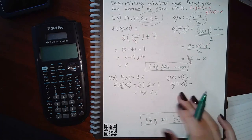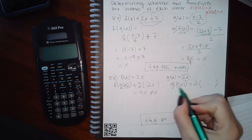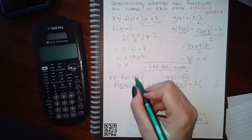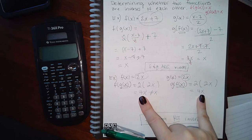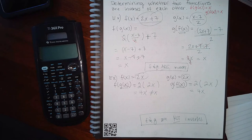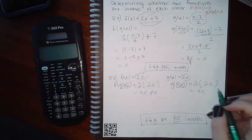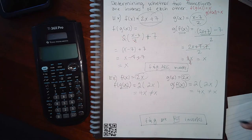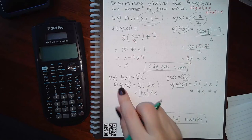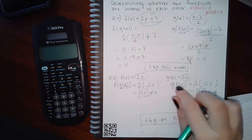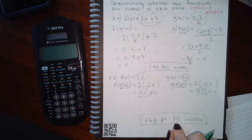However, this problem requires filling in both compositions. For g of f: write the g function with a blank, and put f of x — which is 2x — inside. That also gives 4x. Although both compositions match each other, neither equals just x, so these two functions are not inverses. For f of g type 4x, for g of f type 4x, and select that they are not inverses.